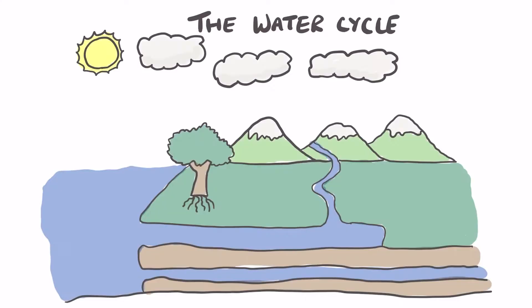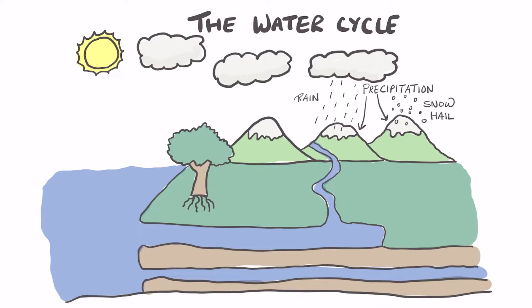We can start by looking at the clouds. The clouds release their water in the form of precipitation, which is rain, snow, or hail. This water finds its way into rivers, streams, and lakes in the form of runoff.